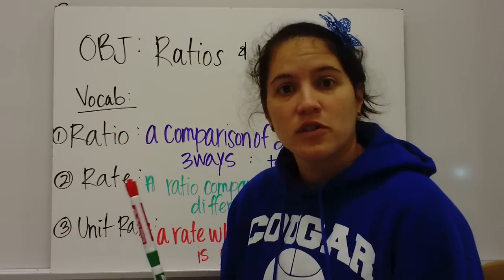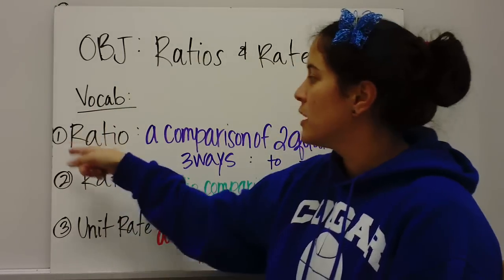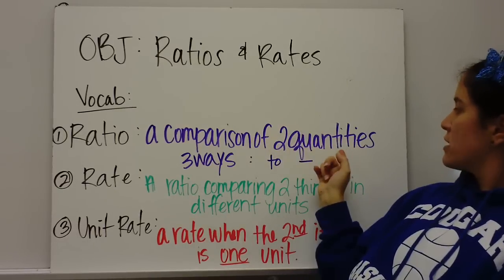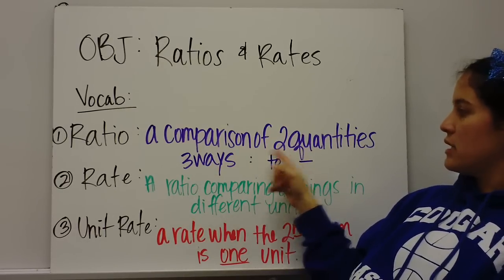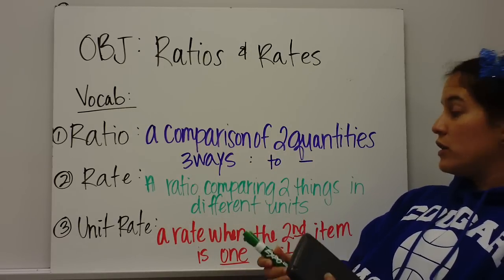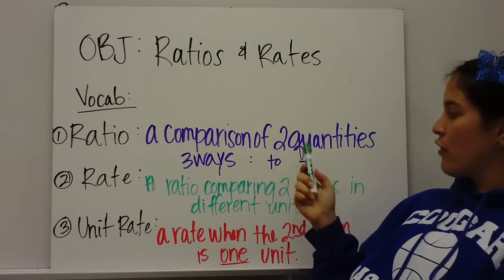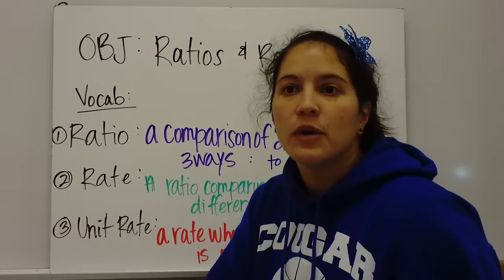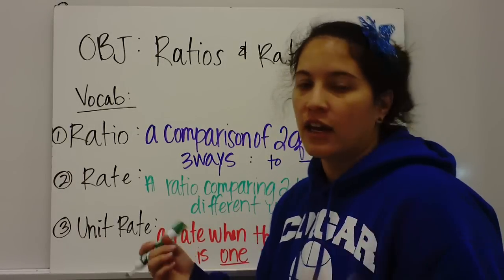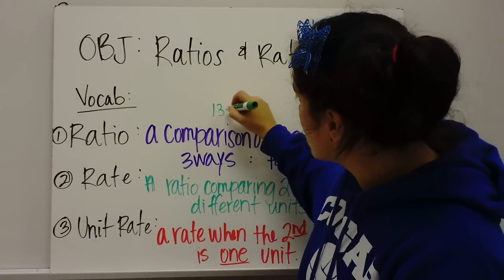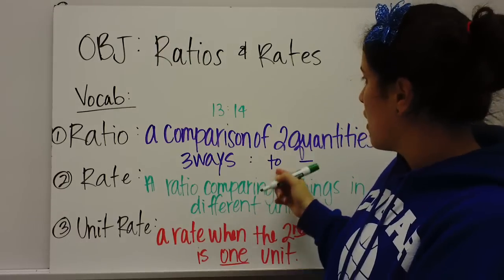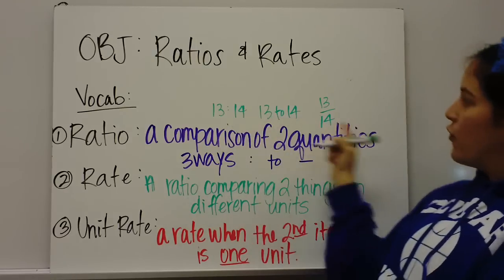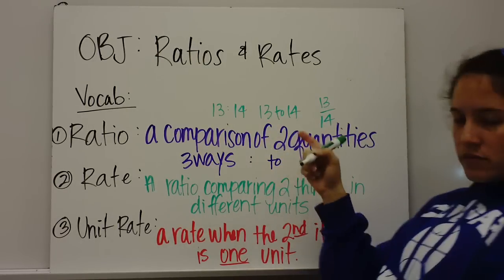There are some vocabularies. You need to write these words down. I'm going to explain them to you. So a ratio, first word ratio, a comparison of two quantities and there are three ways to write a ratio. You can either use a colon, the word two, or a fraction bar. So for example, if we wanted to do the ratio of girls to boys, let's say we have 13 girls, 14 boys, 13 to 14 or 13 to 14. So those are three ways to write a ratio. Make sure you get that down.